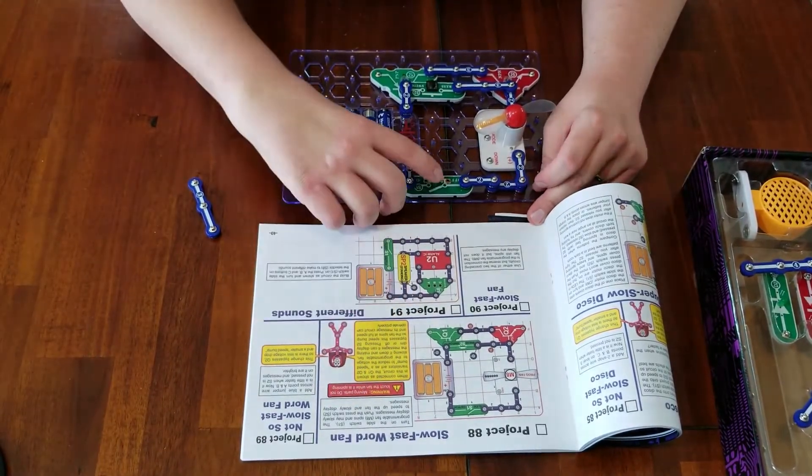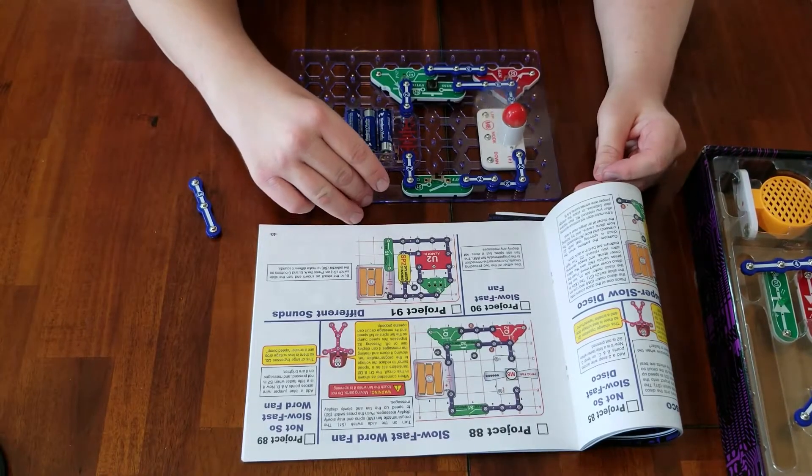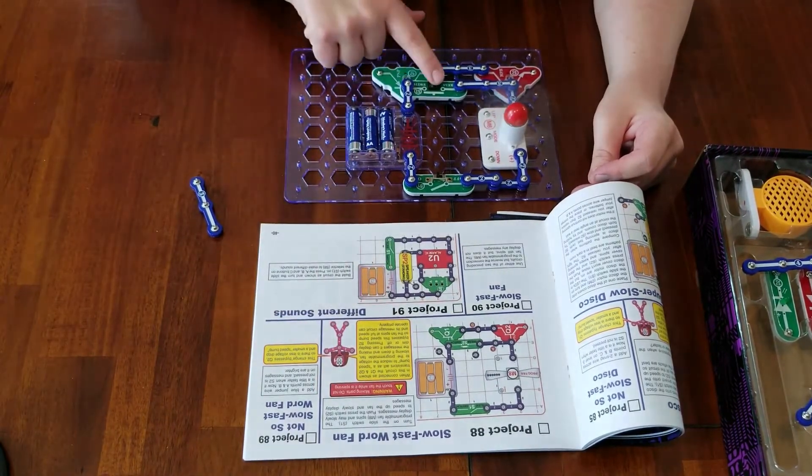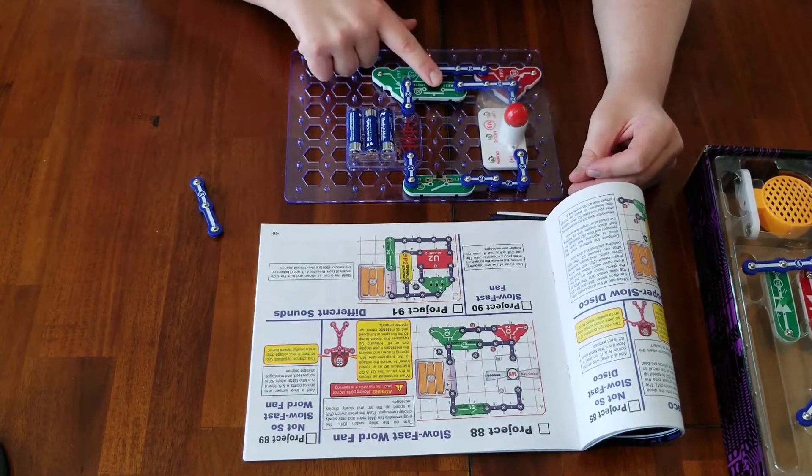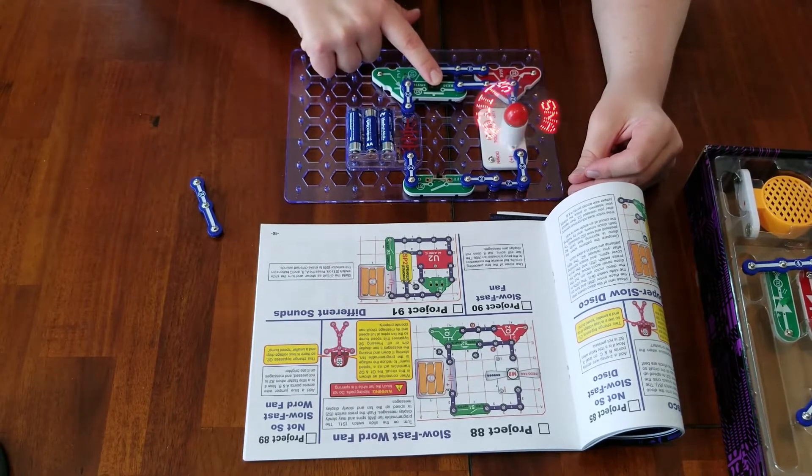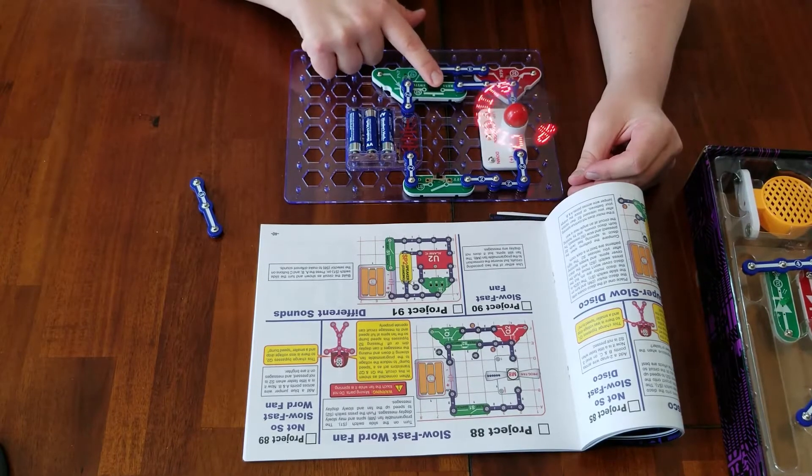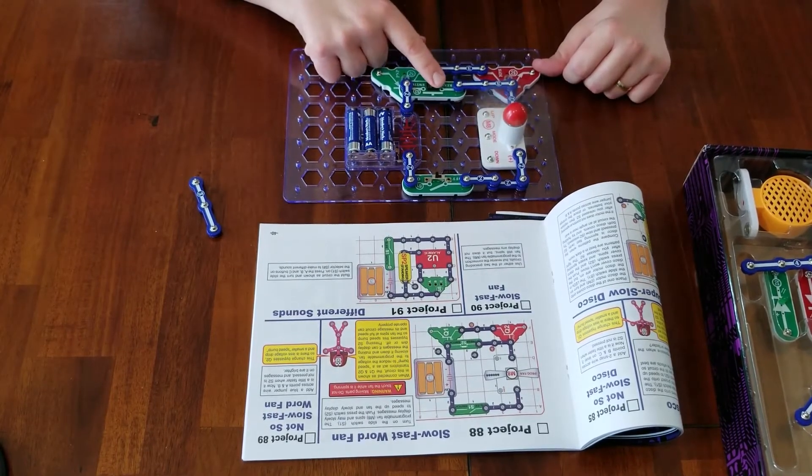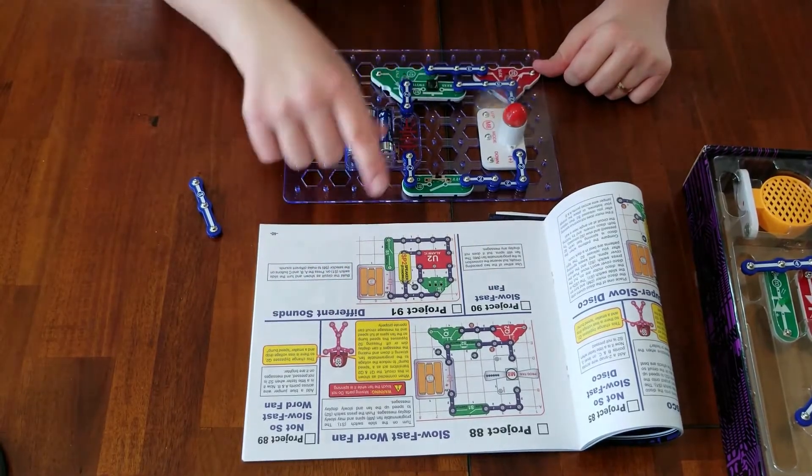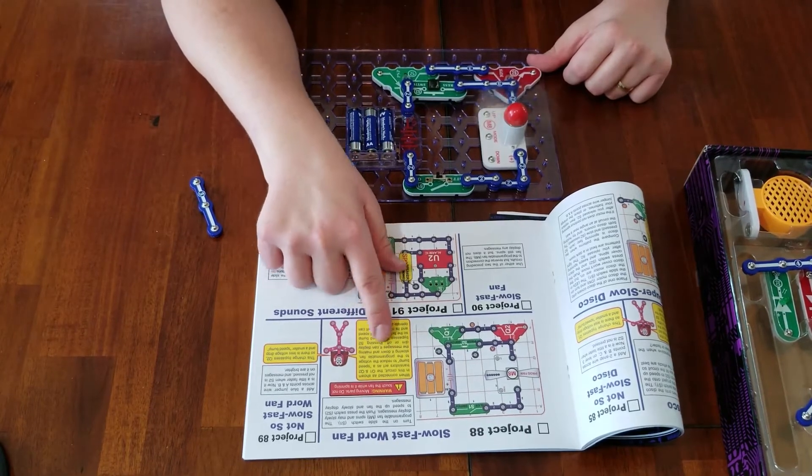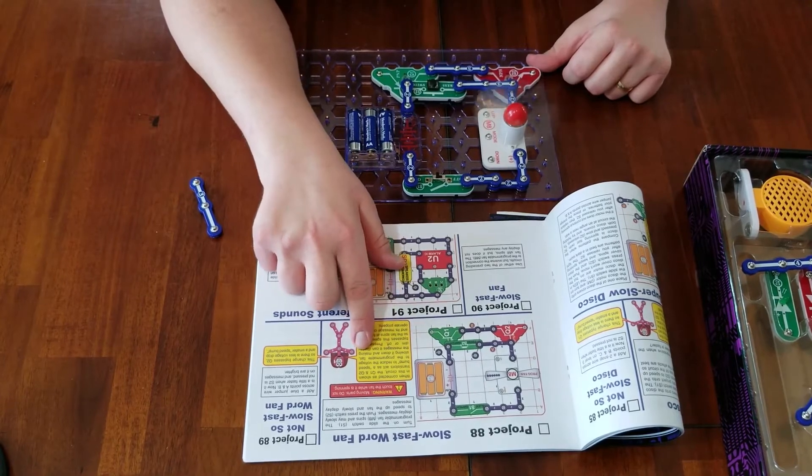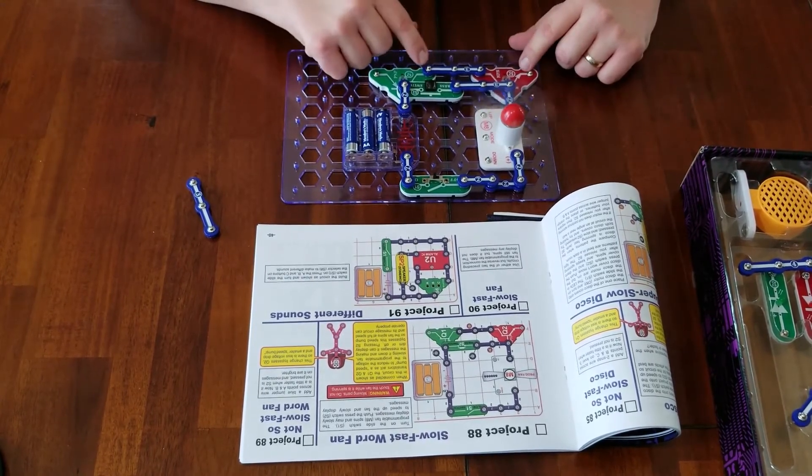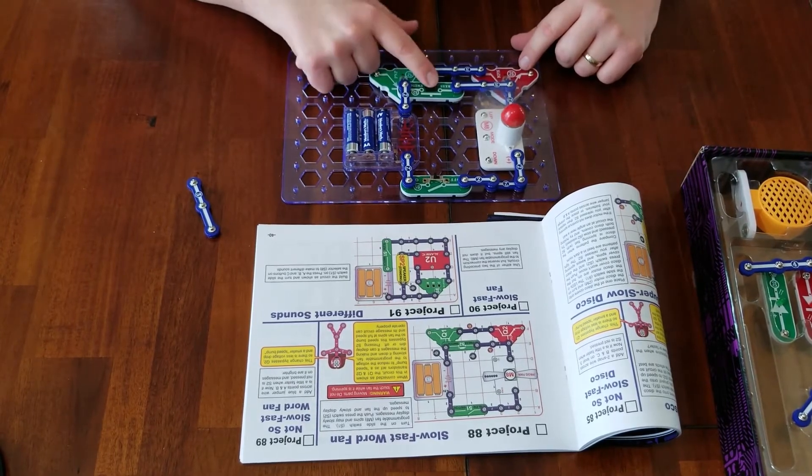Here it says turn on the slide switch S1. The programmable fan spins and may slowly display messages. Push the press switch S2, which is this guy, to speed up the fan and slow down display messages. There you go. You got to hold it down. There's your message. Do you see that? It's going faster, it's going slower. And it says warning of moving parts. Do not touch the fan while it's spinning. When connected as shown in the circuit, the Q1 and Q2 transistors act as a speed bump to reduce the voltage to the programmable fan. That's what these are for. Pressing S2 bypasses this speed bump so that the fan spins at full speed and its message circuit can operate properly. Isn't that cool? What's more educational than that?